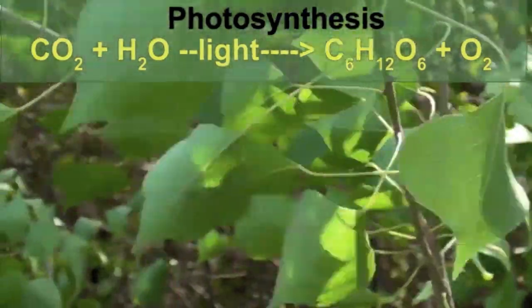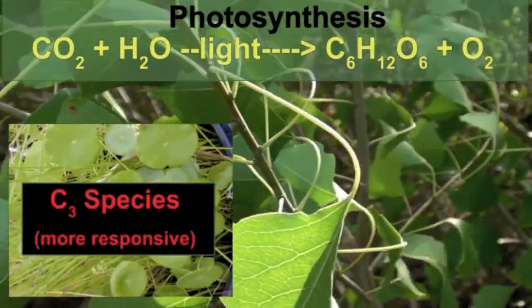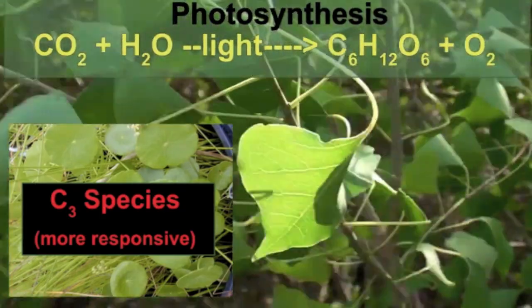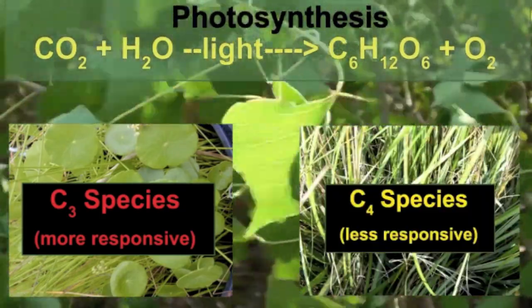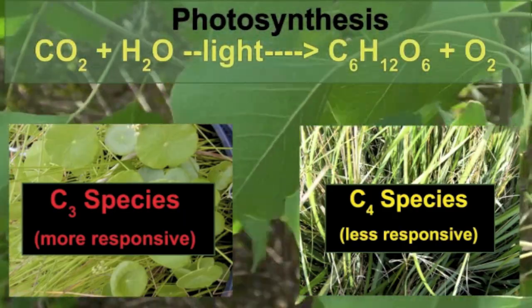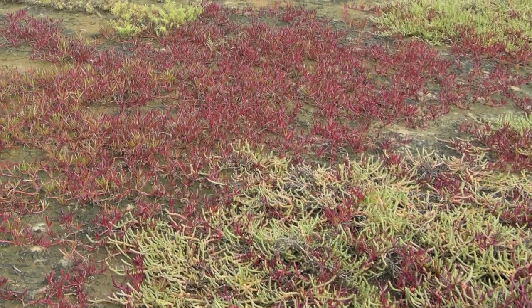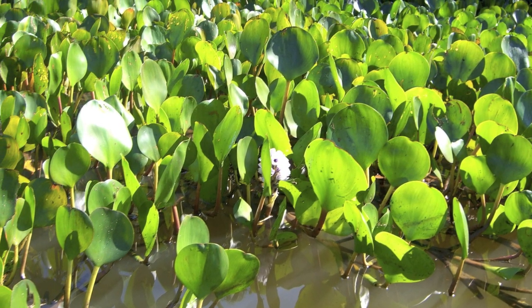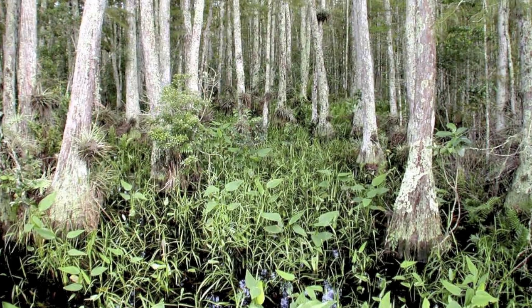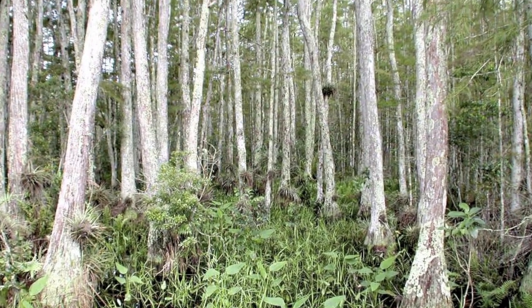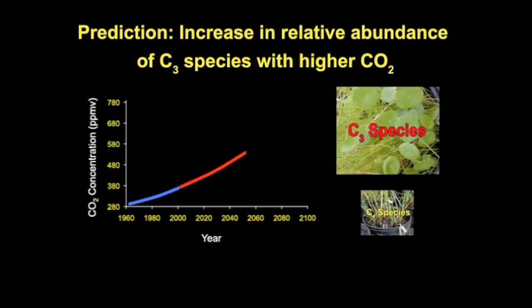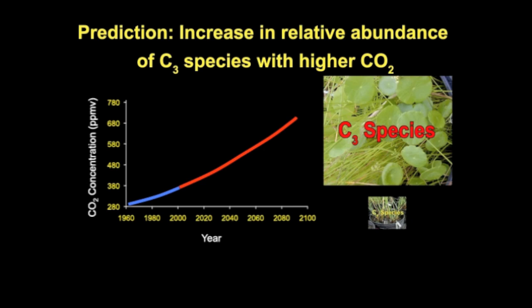Some plants are more responsive to increases in CO2. These are called C3 species. C4 species are less responsive to CO2 because they are already quite efficient at capturing CO2. Because of species differences in sensitivity to CO2, the composition of a wetland is one factor that will determine whether increases in CO2 will have an effect or not. One simple prediction is that C3 species will increase in abundance relative to C4 species in a mixed community as CO2 increases.